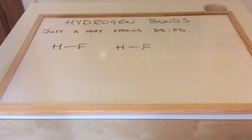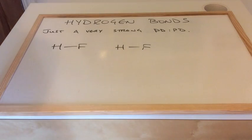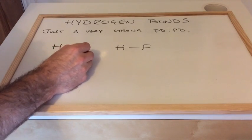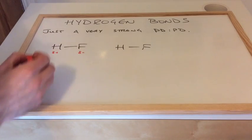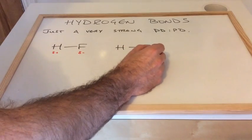We'll start with the simplest example of hydrogen bonds and that would be between HF molecules. So if we think about fluorine, most electronegative element, we've got the delta minus on the F, delta plus on the H. So this is a permanent dipole in the molecule, same on this one.